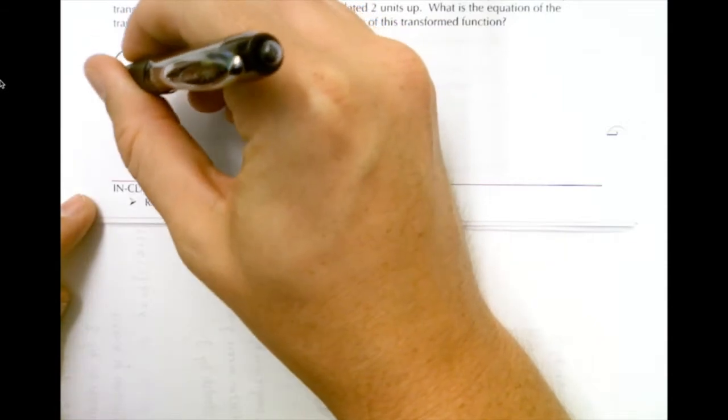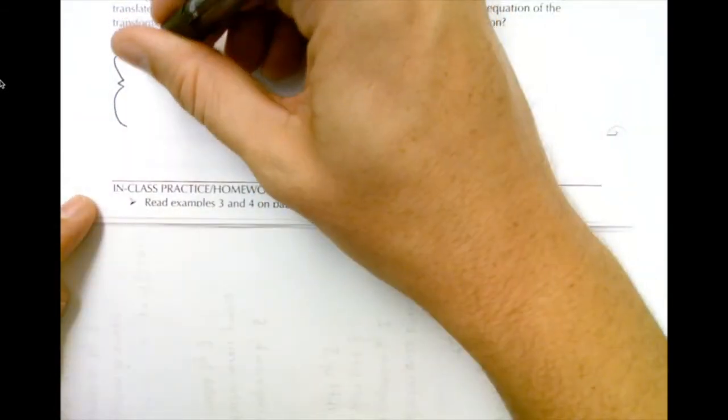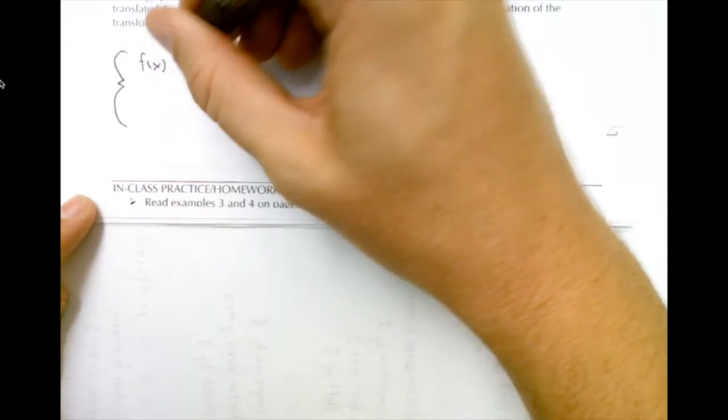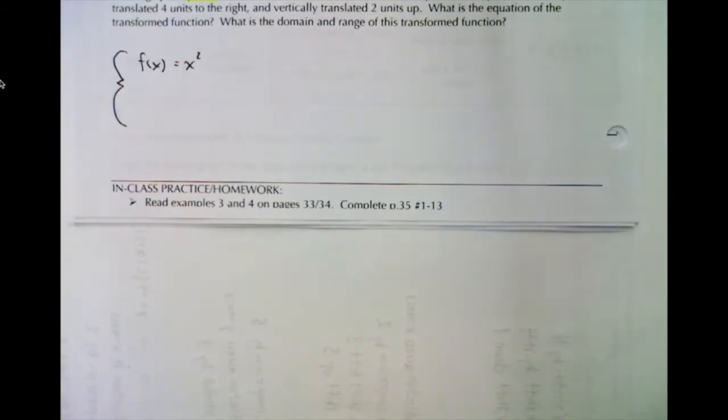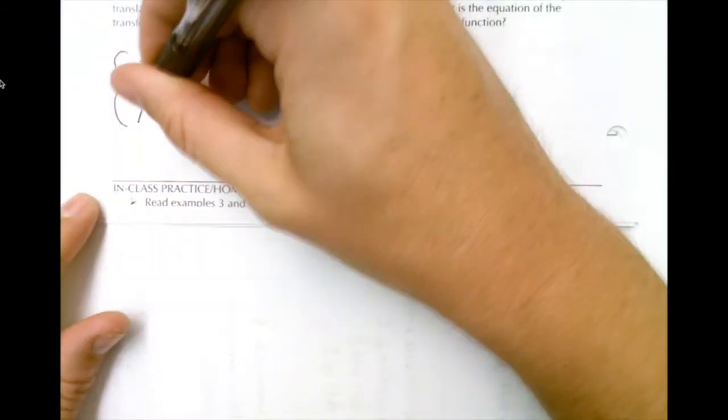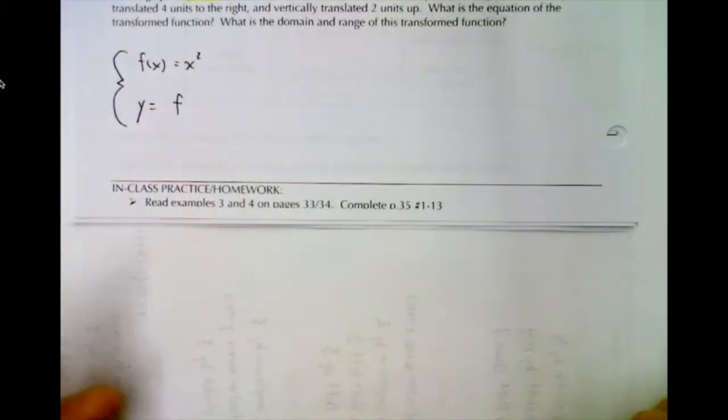So if we wanted to write a function notation equation we could start by formatting it as f of x equals x squared. We'll use f of x and the parent function is x squared. Inside we'll try to write a transformation equation so we know it's going to start with y equals and there'll be an a value and our f for function.